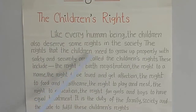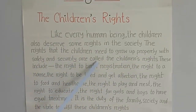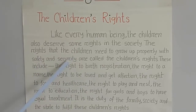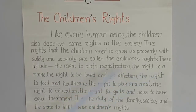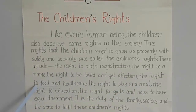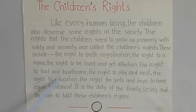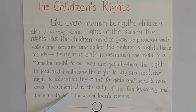The rights that the children need to grow up properly with safety and security are called the children's rights. So as a child, you have the right to get safety and security. These include the right to birth registration, the right to obey, the right to be loved and get affection, the right to food and health care, the right to play and to rest, the right to education, and the right for girls and boys to have equal treatment.